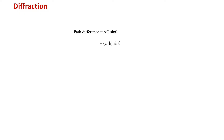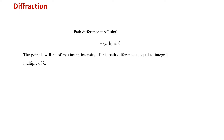Diffraction is possible when the path difference of the diffracted light is equal to AC sin θ. The AC term is calculated with the help of the characteristics of a grating used for diffraction. A diffraction grating is characterized by the grating element, which is a+b. So a+b sin θ is the factor we consider while calculating the path difference.